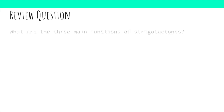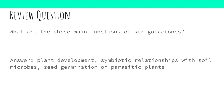Hopefully you were paying attention during this video because here is the review question: What are the three main functions of strigolactones? The answer is plant development, symbiotic relationships with soil microbes, and seed germination of parasitic plants.